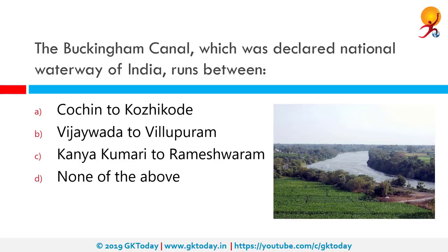The Buckingham Canal, declared a National Waterway of India, runs between which two points? The Buckingham Canal is a 796 km long freshwater navigation canal that parallels the Coromandel coast of South India from Kakinada in East Godavari district of Andhra Pradesh to Villupuram district in Tamil Nadu. It runs between Vijayawada and Villupuram. The canal connects most of the natural backwaters along the coast to Chennai port.